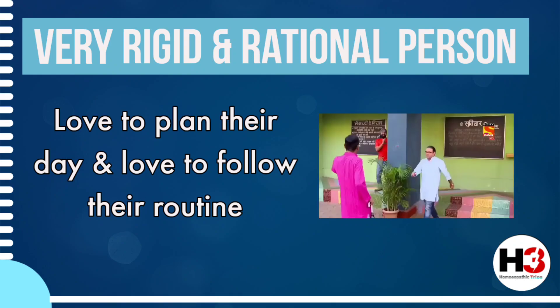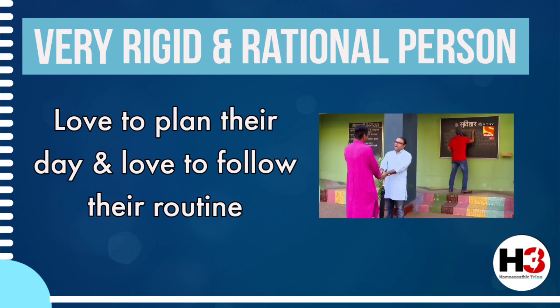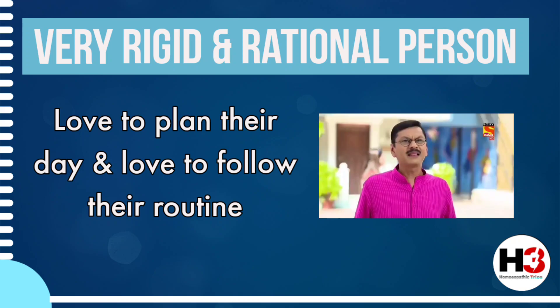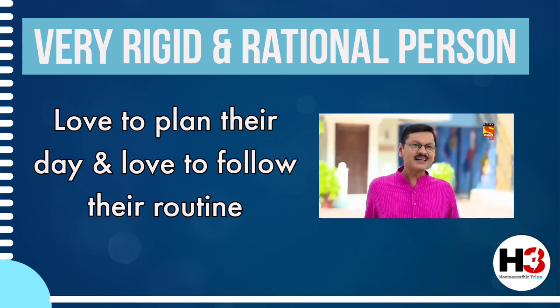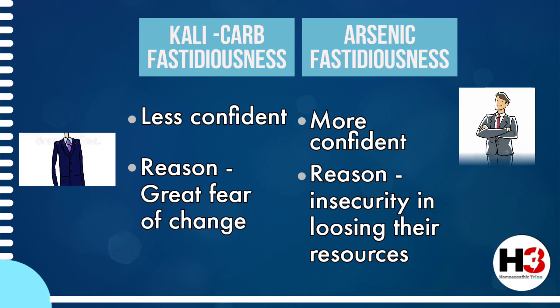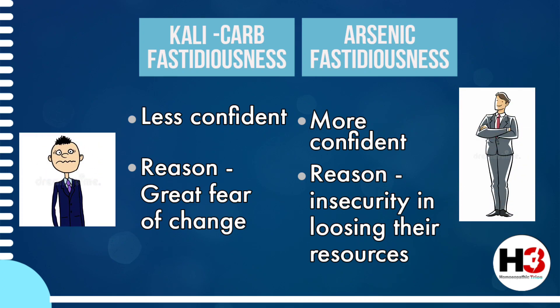A Kali Carb person is very rigid and rational, loves to work by intellect, and is very calculative. They love to plan their day and mostly carry out their plans, feeling really bad when they don't. Compared to Arsenic, which also features fastidiousness and rule-following, Arsenic individuals have a stronger ego and their fastidiousness stems from great insecurity about losing resources. Kali individuals follow rules due to a strong fear of change, and comparatively have lesser confidence. For more about Arsenic, a separate video is available via the link in the i-button.